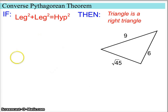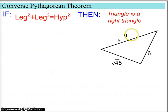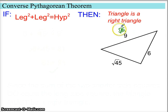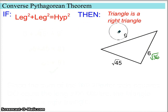Let's look at another example. This triangle has an irrational side length, but we're still going to use it. It seems like 9 might be the longest side. If you're ever not sure, you can think about each value as a square root: 9 is the square root of 81, the other sides are the square root of 45 and the square root of 36. So 9 is the longest side.